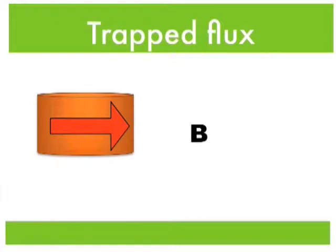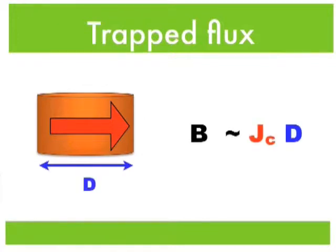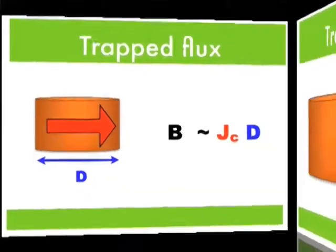If you do that, you very quickly show that there are two important parameters. One is the critical current density, and the second one is the sample size. And the flux trapping capability is determined by the product of those two. So it's okay to go to bigger samples, provided you don't degrade JC.